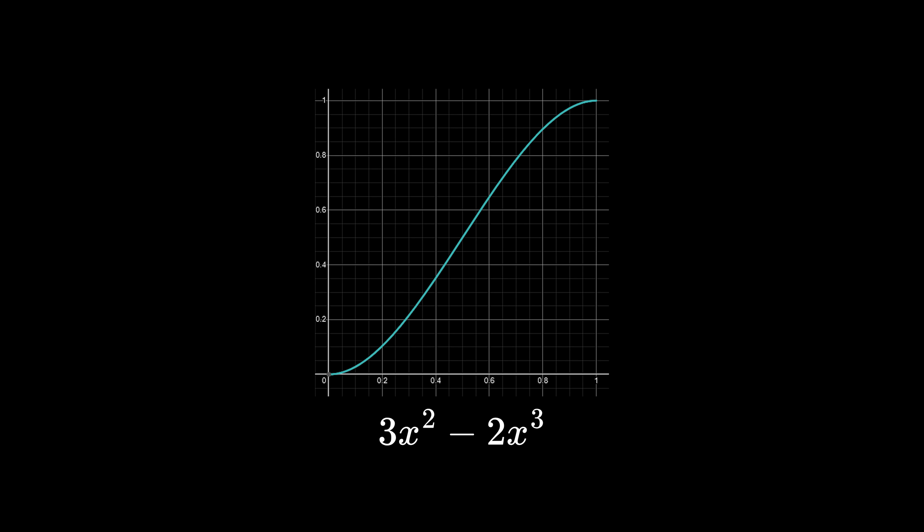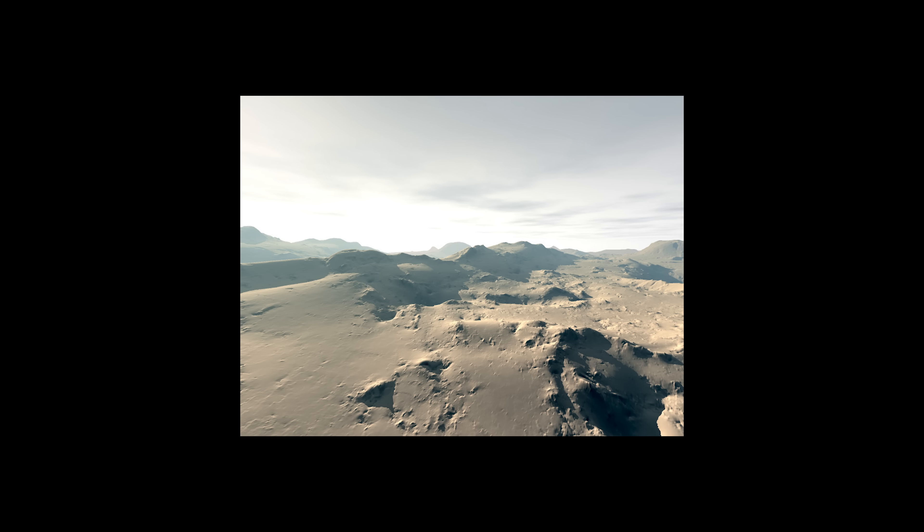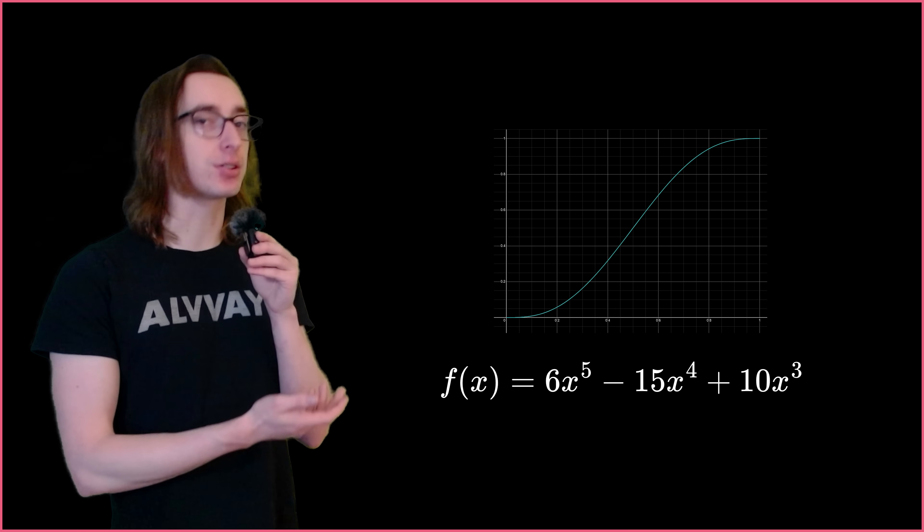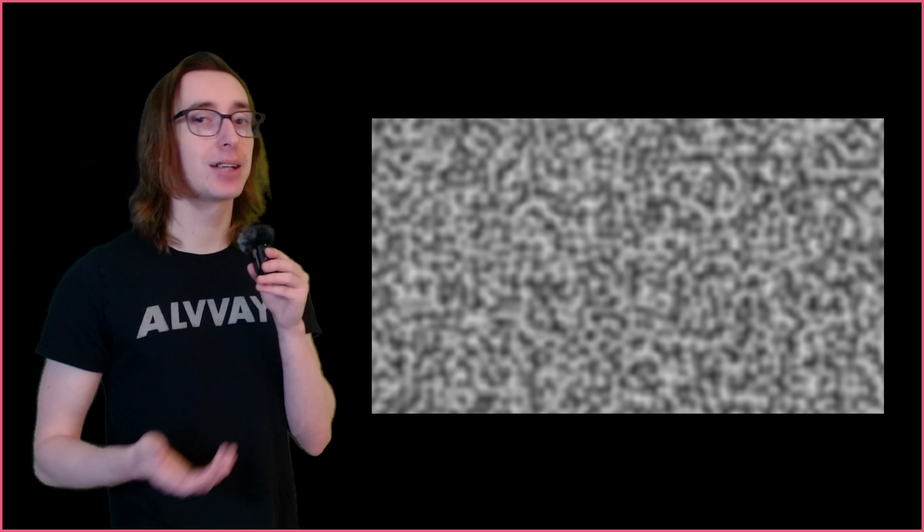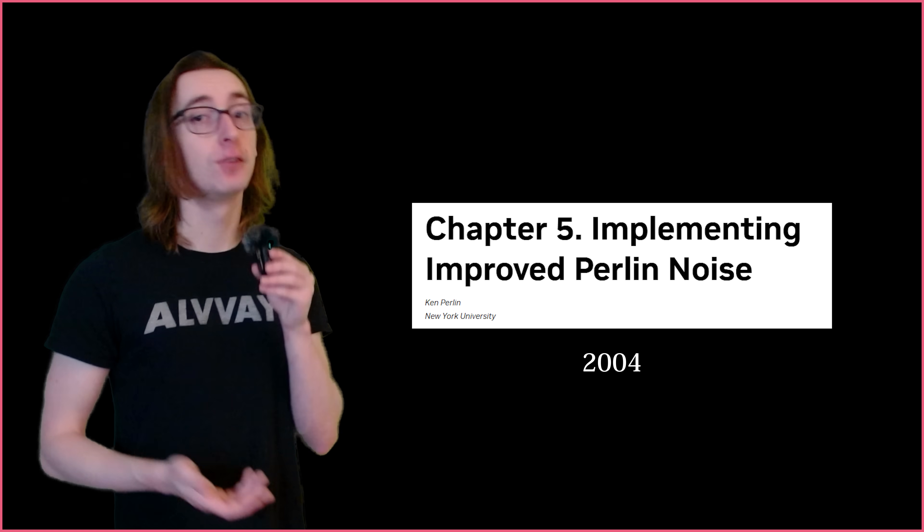Ken Perlin chose a fifth-order interpolant because it fits the requirements of a continuous second-order derivative, while this mildly changes the appearance of the Perlin noise, it solves the gradient discontinuity. With uniformly distributed gradient vectors and a better interpolant, we have finished the improved Perlin noise algorithm as explained by Ken Perlin in GPU Gems Chapter 5 from 2004.